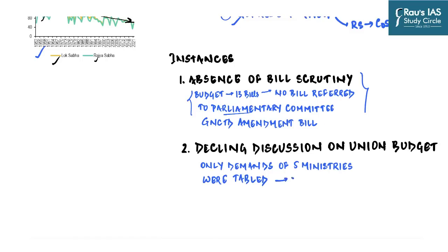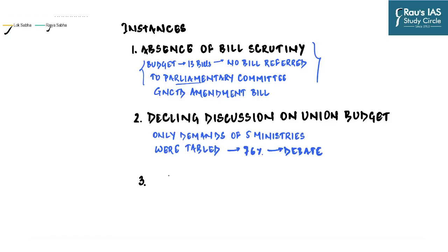A second indicator is the lack of discussion of the Union Budget. Lok Sabha should debate each and every demand for each ministry, but in a recent budget session the government listed only five ministries for detailed discussion. Around 76 percent of the Union Budget was approved without any debate. This defeats the accountability mechanism — the constitutional framers required all expenditure from the Consolidated Fund of India to be approved by Lok Sabha.